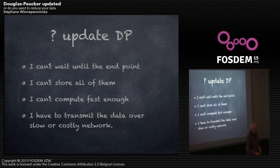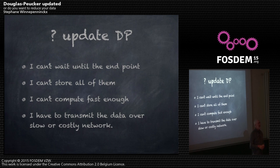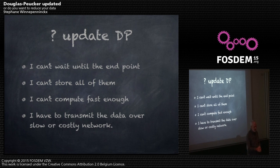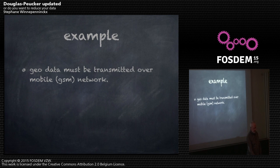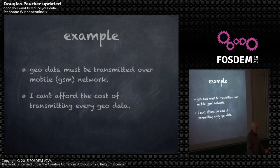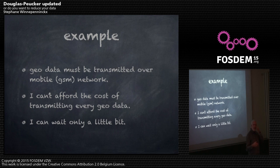Another reason: maybe I need to transmit the data. Transmitting is easy with a cable or Wi-Fi, but when you're in your car, transmitting at every point will cost a lot on your GSM network. There is always a cost, so why transmit all your data only to throw it away afterwards? You're better off using the updated Douglas-Peucker and simplifying on the go. The cost is probably too high, but I can wait a little bit — if I don't have the most recent data it's okay.